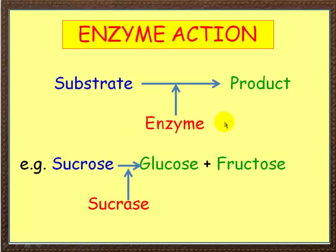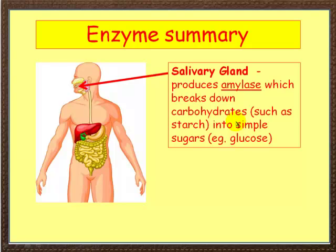Let's look at some of the enzymes around the human body. In your mouth you've got the salivary gland, which produces amylase. Amylase breaks down carbohydrates such as starch into simple sugars, which is glucose.